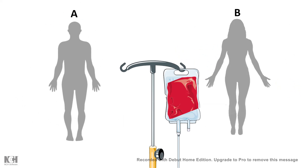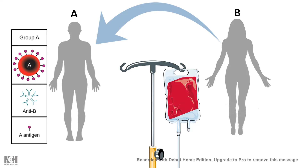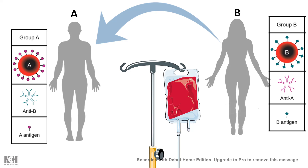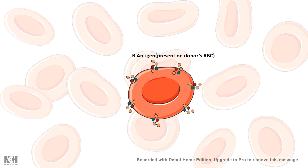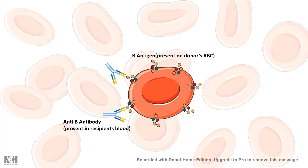Imagine a situation where a donor with blood group B is donating blood to a recipient with blood group A — clearly there is a mismatch. Blood group A has A antigen on its RBC surface and anti-B antibody in its serum. Blood group B has B antigen on its surface and anti-A in its serum. The donor RBC, carrying B antigen, is now circulating inside the host's blood, and the host's serum has a lot of anti-B antibody.